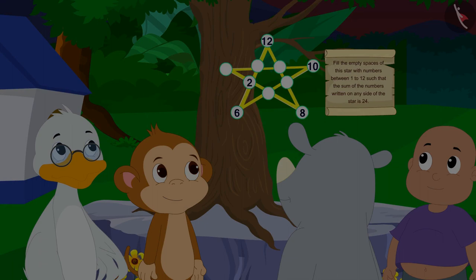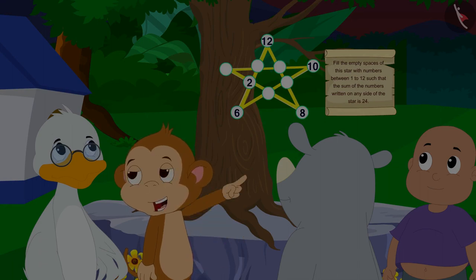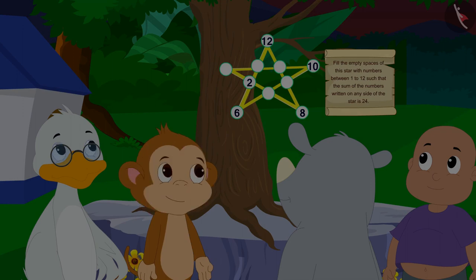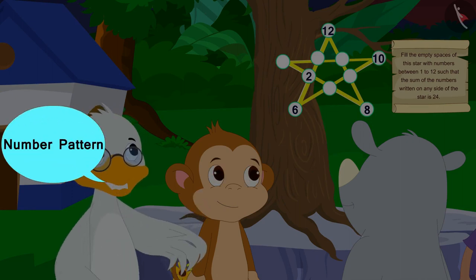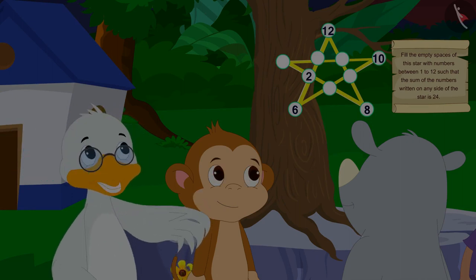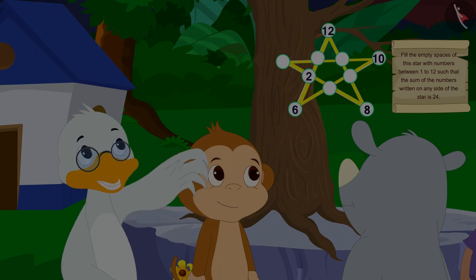said Badbole uncle. But what could these numbers mean uncle? Babban asked the uncle. It looks like some kind of number pattern. Look here. It is written on the top.